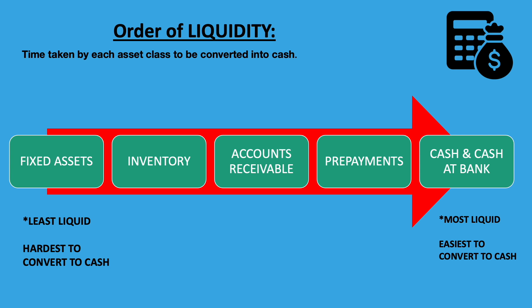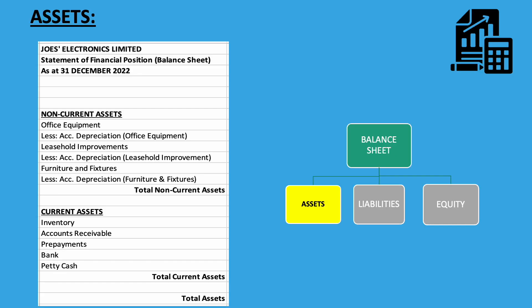Inventory is listed before receivables because selling inventory and converting it to cash will take a longer time than chasing a debtor to pay up their debts. Assets are divided into two classes. First is non-current assets, second are current assets. Non-current assets, acquired on a long-term basis, are used to generate revenue for the business. Non-current assets are long-term and have a useful life of more than one year. They're not held for resale in the normal course of trading, so they are not inventory.